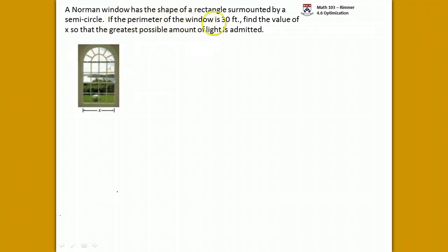If the perimeter of the window is 30 feet, find the value of x so that the greatest possible amount of light is admitted. Here we have x labeled as this bottom dimension of the base of the window.